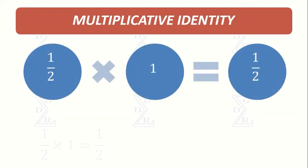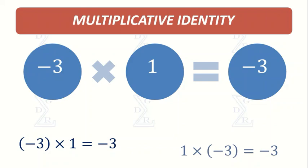Multiplicative identity. The product of half and 1 is half, or vice versa. Or the product of minus 3 and 1 is minus 3, or vice versa. Like many examples.